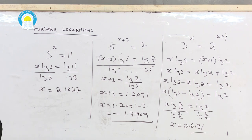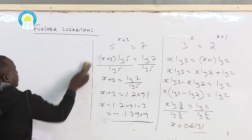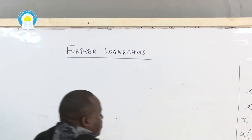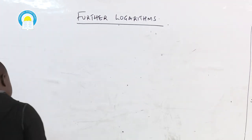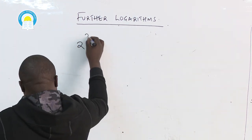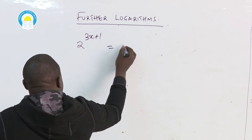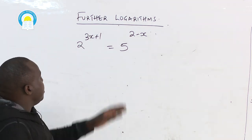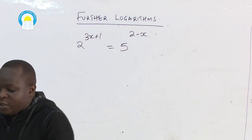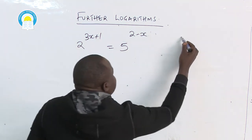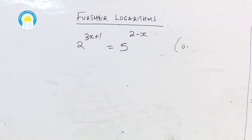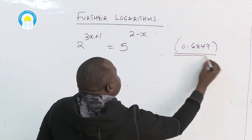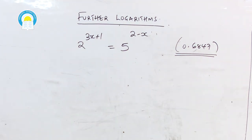I'll leave you with one question on that concept: try 2 raised to 3X plus 1 equals 5 raised to 2 minus X. It follows almost the same approach as the previous example. Try to work it out and get the answer. If you can do that, it will be okay.